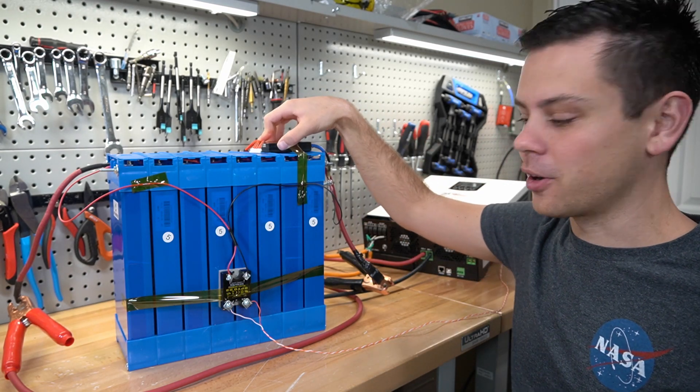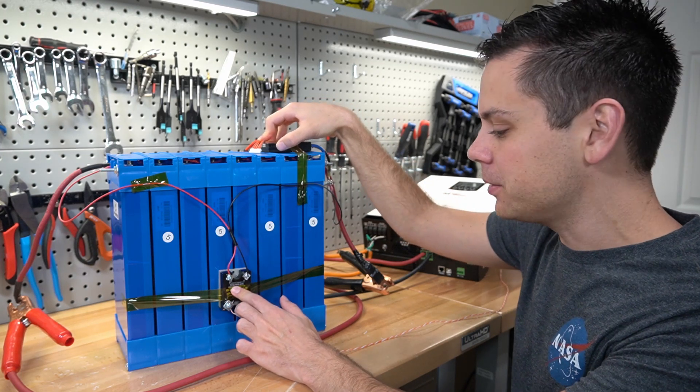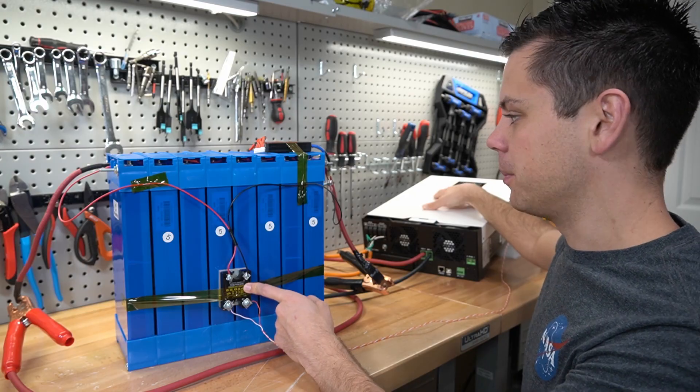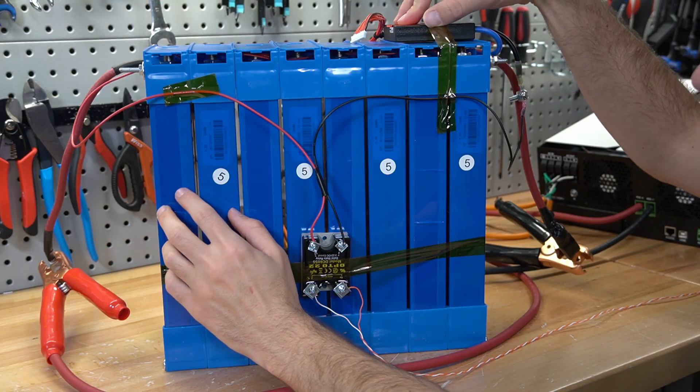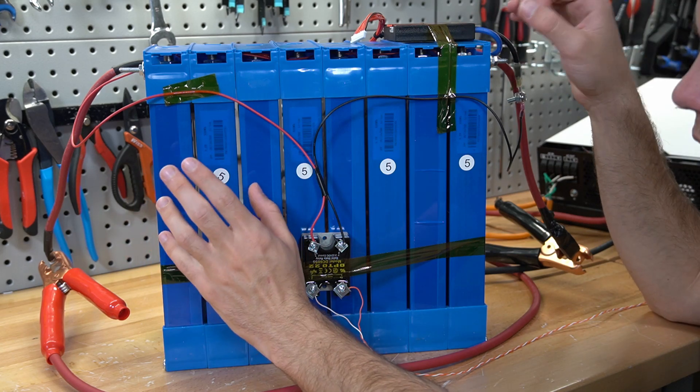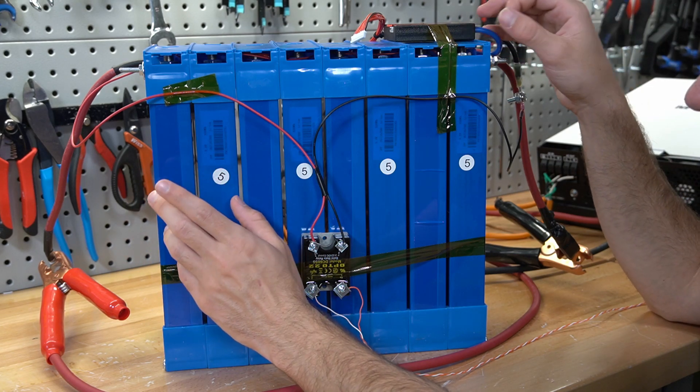You can use any BMS on the market to trigger one of these optocouplers and you can modify most inverters to work with this optocoupler. What's nice is that this BMS could be a 1 or 100 amp BMS and it does not matter. It's only there to monitor and manage the cells.